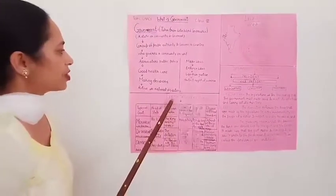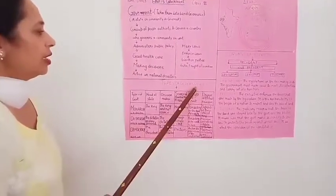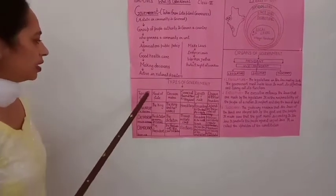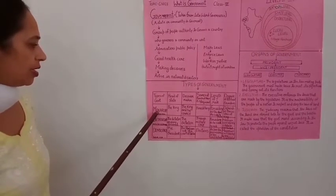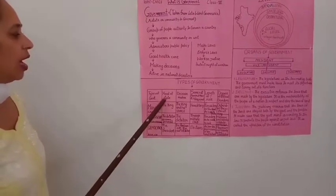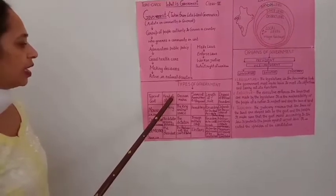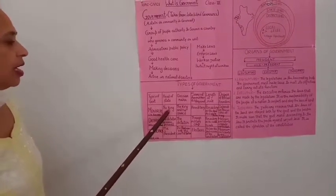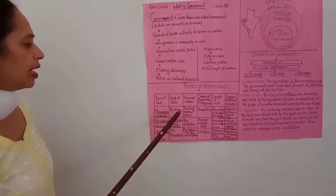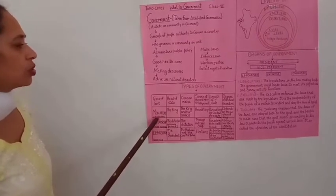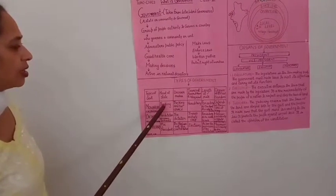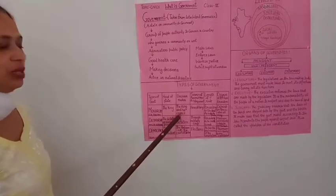Then comes the types of government — different types of government that are found in different countries. First one is Monarchy — Monarchy UK as well as in Bhutan में पाई जाती है. Head of state in Monarchy — who is head of state? The king. King or queen is head of the state in a Monarchy, like queen is the head in UK. The process of decision making is done by the Monarch, the king, along with his council of ministers.